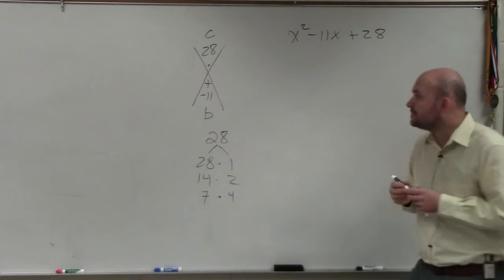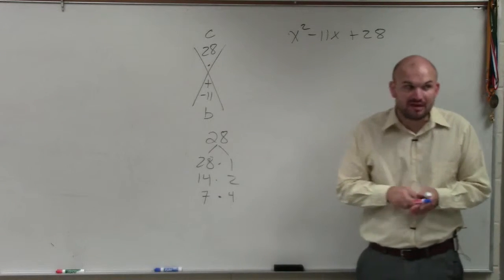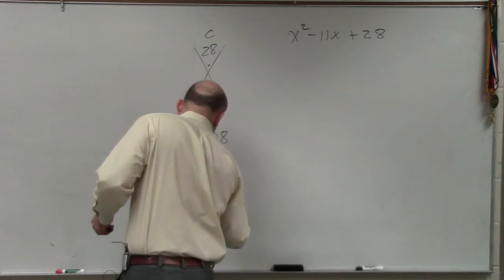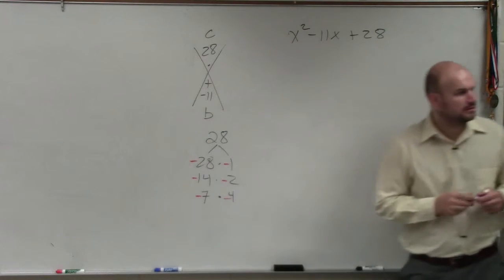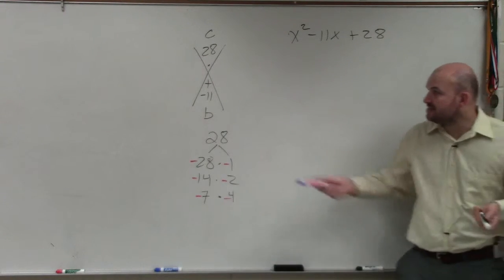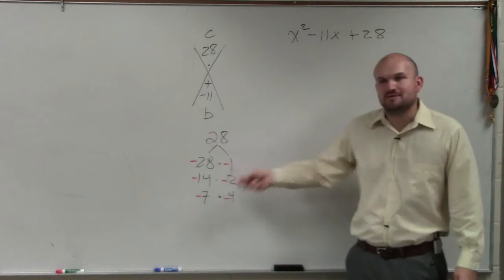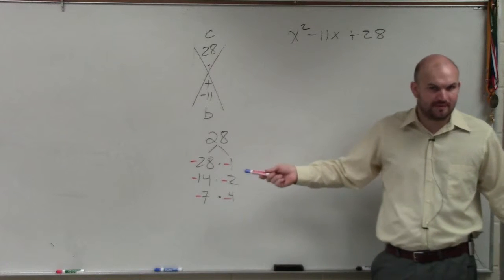Now, if these numbers have to add to give me a negative 11, then I know that if they all multiply to give me positive 28, but they add to give me negative 11, both of the factors have to be negative, both of them.